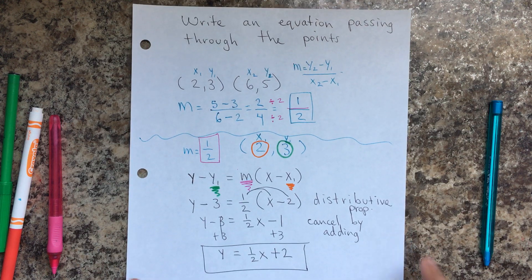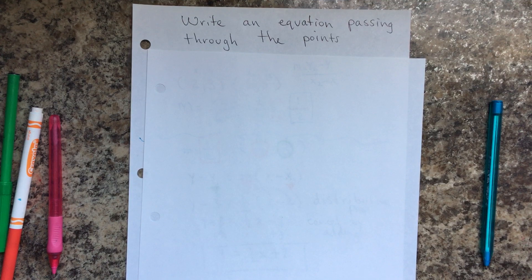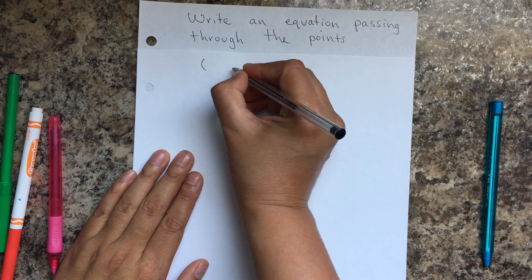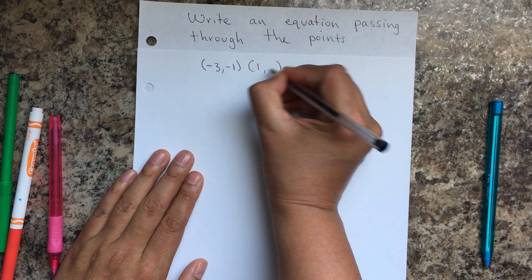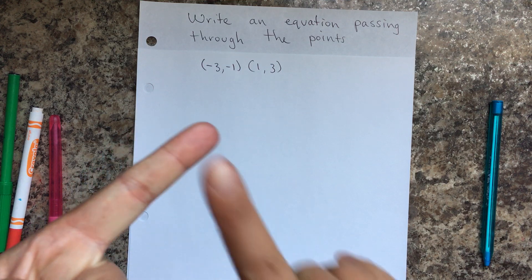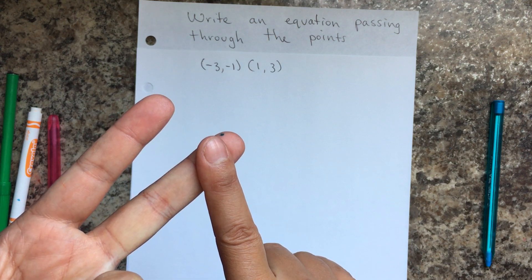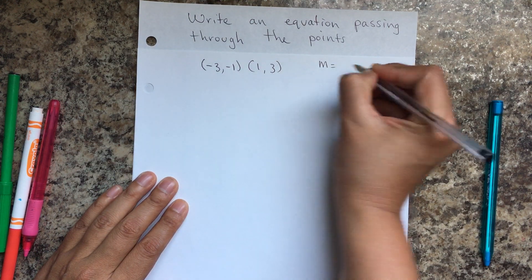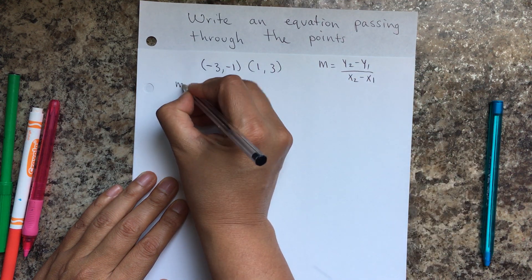Pause it and write it down. Let's do another example. The next example: you're given the points negative 3, negative 1 and 1, 3. Again, first find the slope, then use the slope-point formula to find the equation. So first the slope: m equals y2 minus y1 over x2 minus x1.